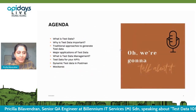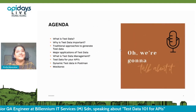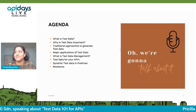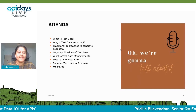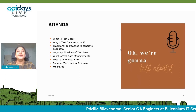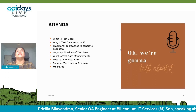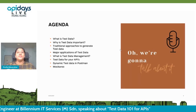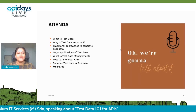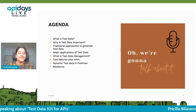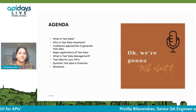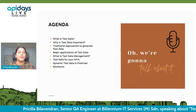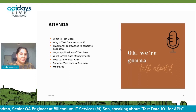For today's agenda, first we'll go back to the basics — we'll see what test data is and why it's so important. Then we have some traditional approaches for test data, and we will see some other applications where we are using it. And some tricks and tools — like what I'm using for testing my APIs in a better way using the data-driven approach. There's a little bit of tricks in Postman, and we are using a tool called Mockaroo, so I'll do a little demo of that tool today.